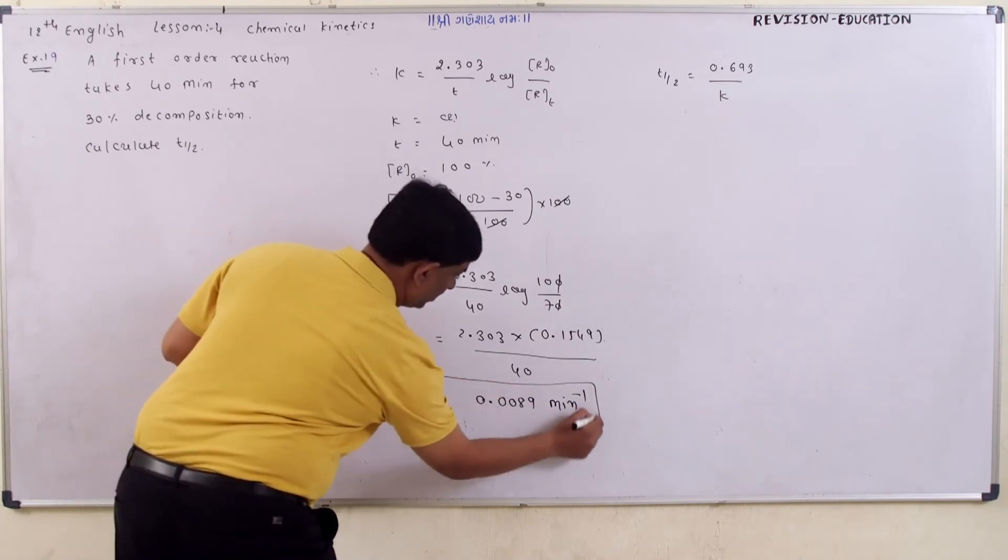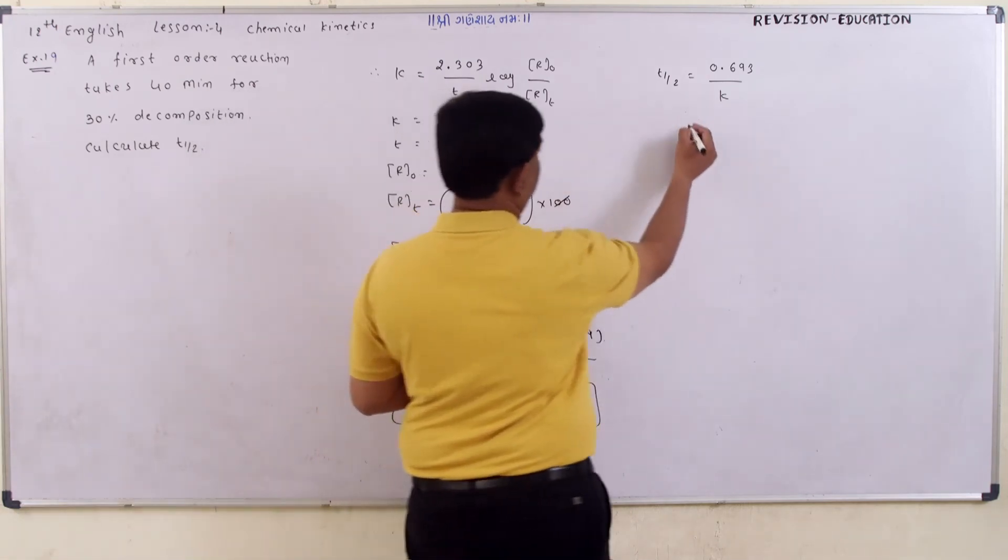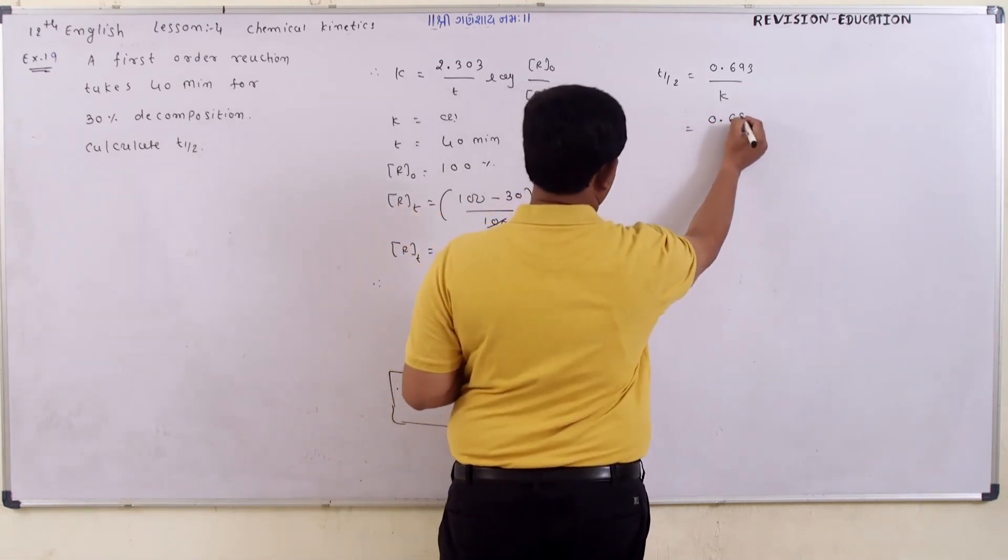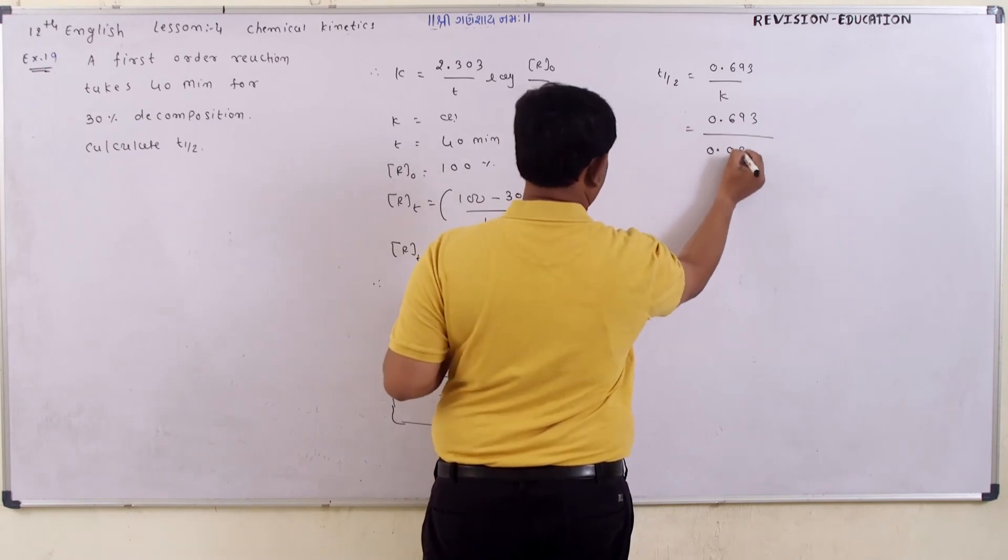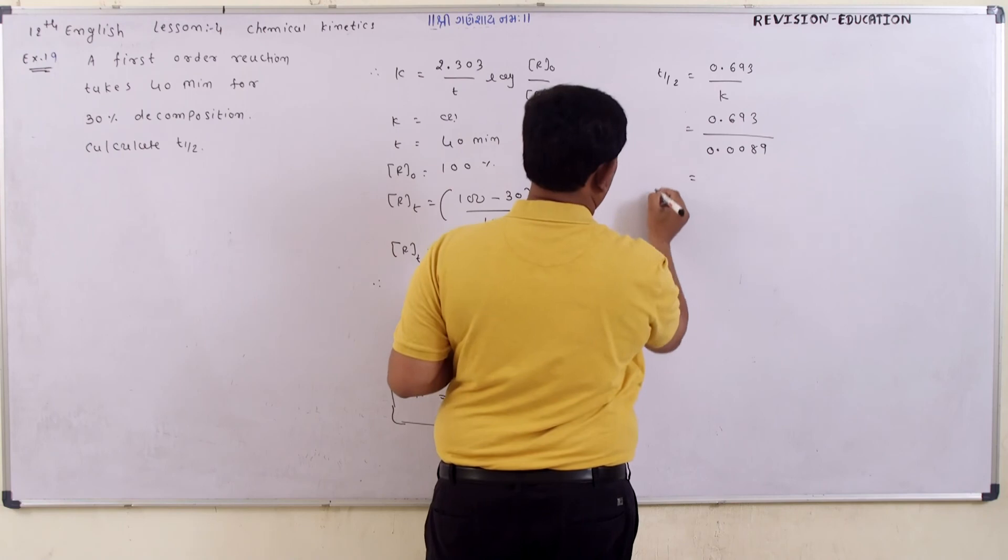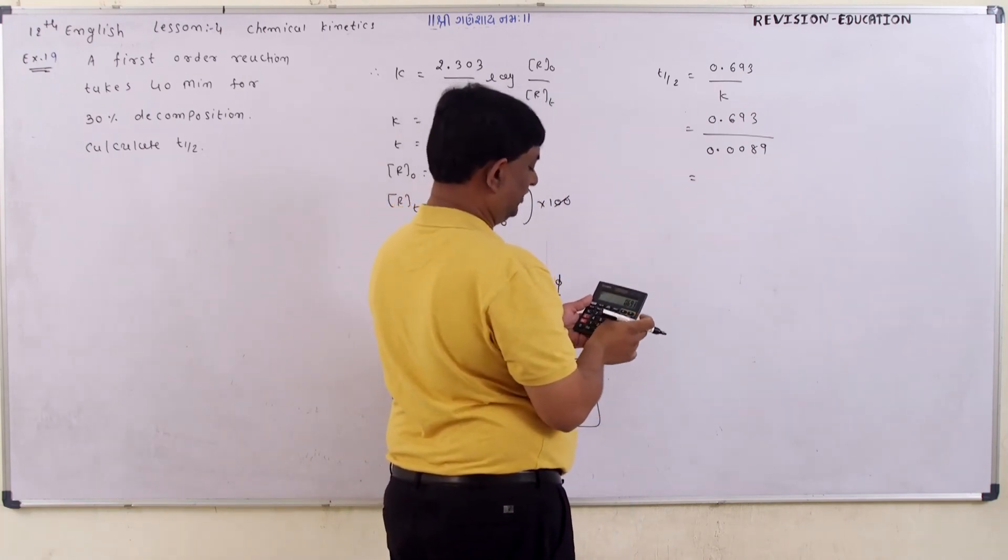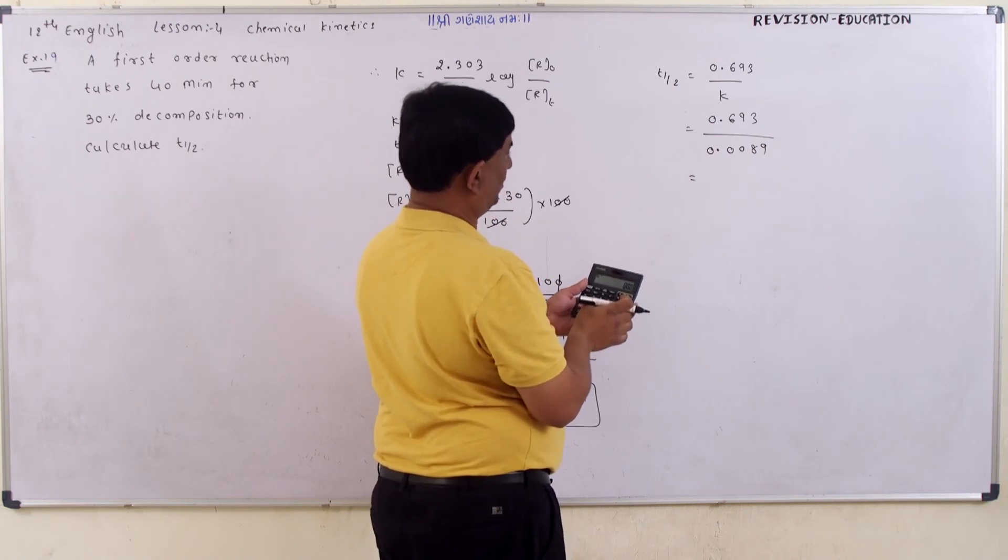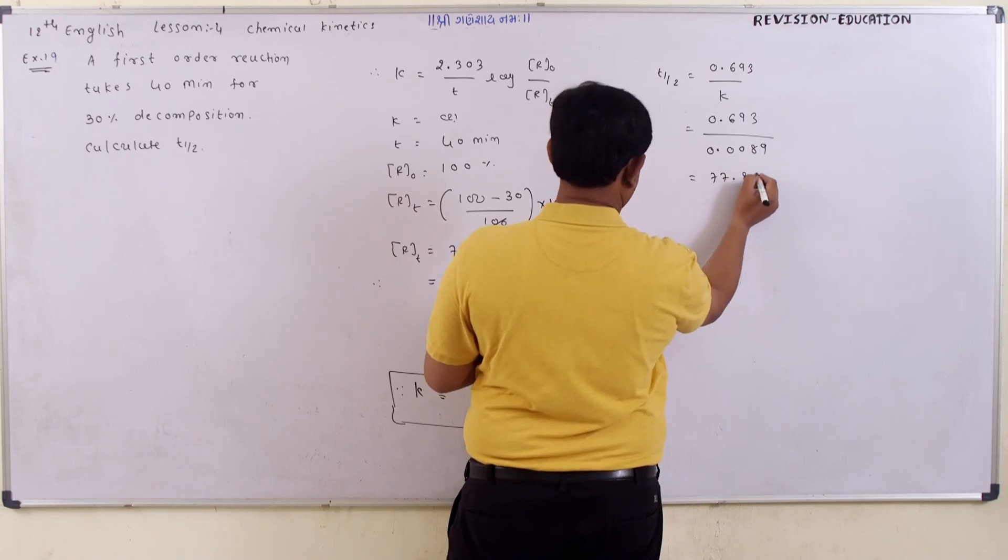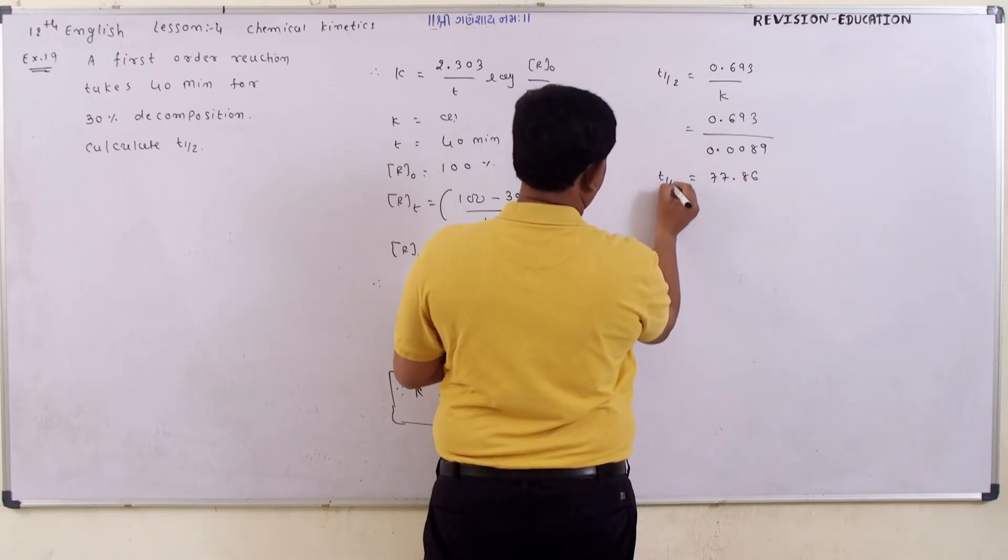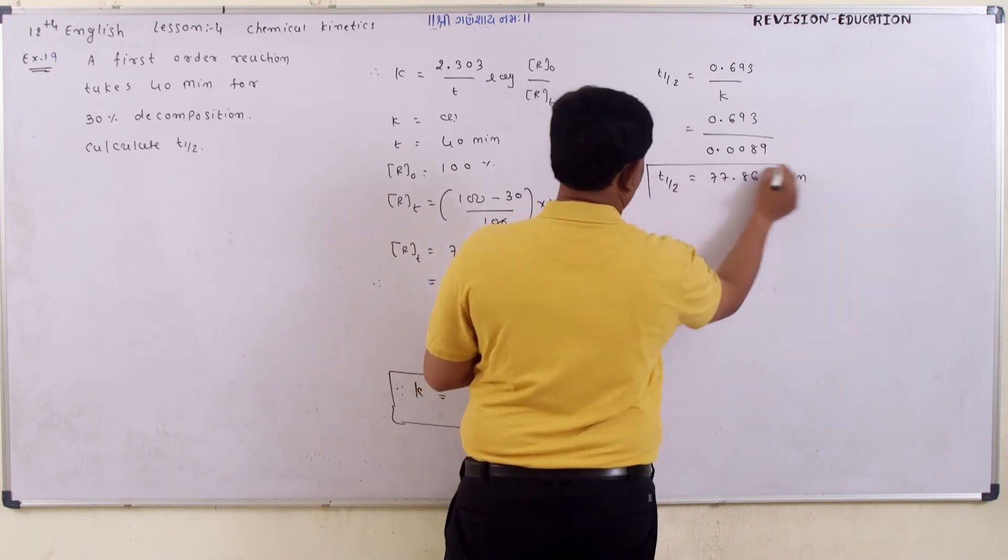Now for half time, t1/2 equals 0.693 divided by k, which is 0.0089. Dividing 0.693 by 0.0089, this is your t1/2 and the unit is minutes.